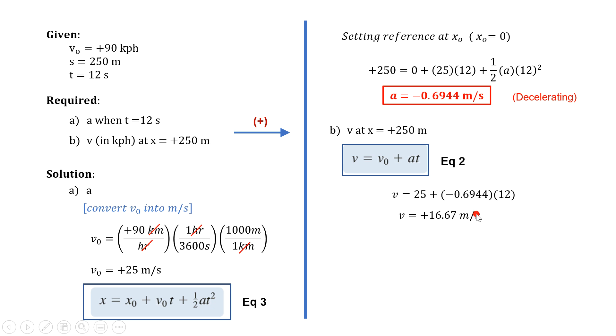Since the unit required is kph, we just convert it same as before by making sure that the resulting unit is kph. Finally, we obtain that final velocity is equal to positive 60 kph. So that's our answers for the second problem.